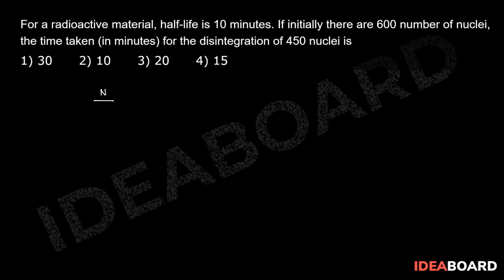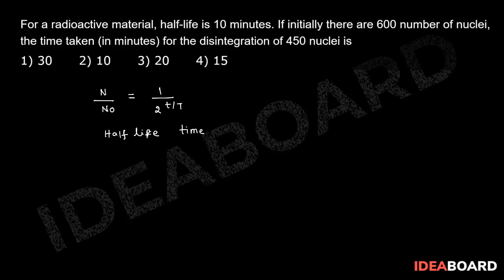The ratio N by N-naught is equal to (1/2)^(t/T). After simplification, the half-life time period works out to 20 minutes, so the third option is the right answer.